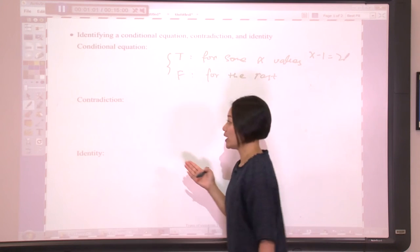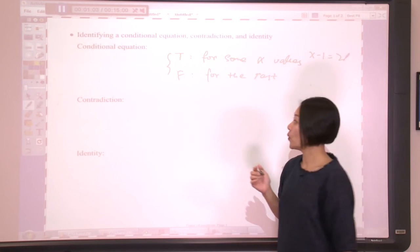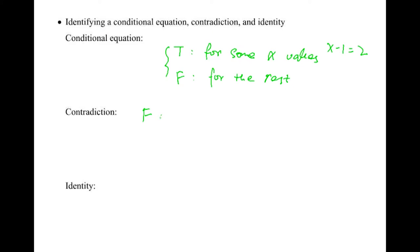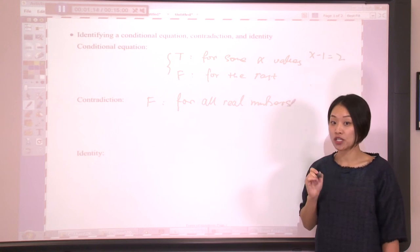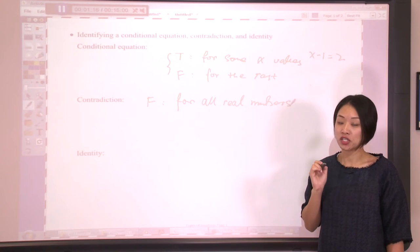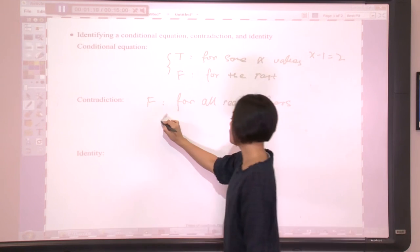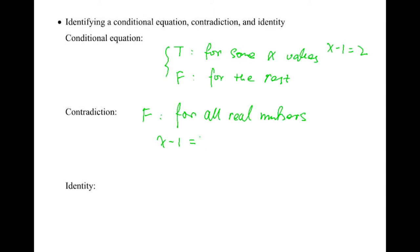Next, contradiction. To be a contradiction, this equation is false for all real numbers. This means no matter which number you pick for x, it is always a false statement. For example, x minus 1 equals x minus 2. In order to solve this one, we subtract x on both sides, so we can have the equation negative 1 equals negative 2.